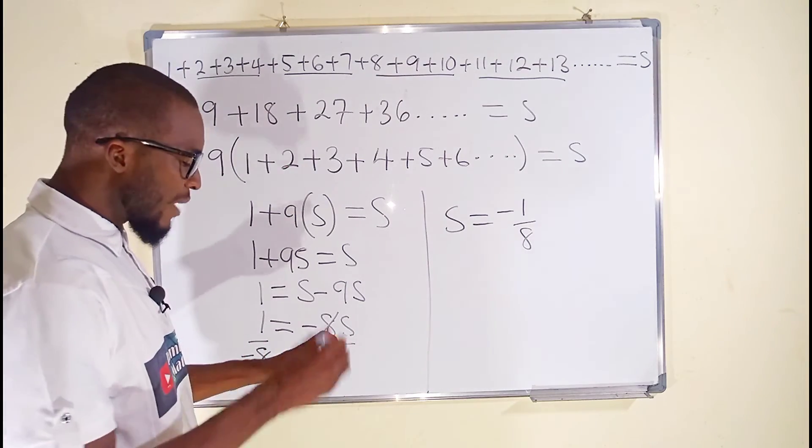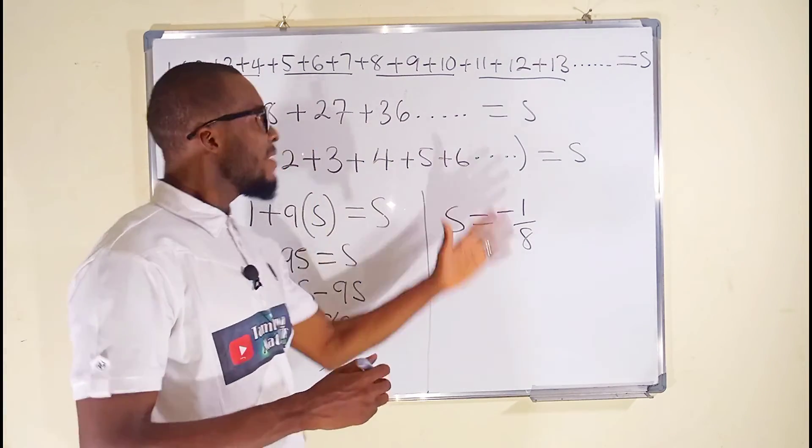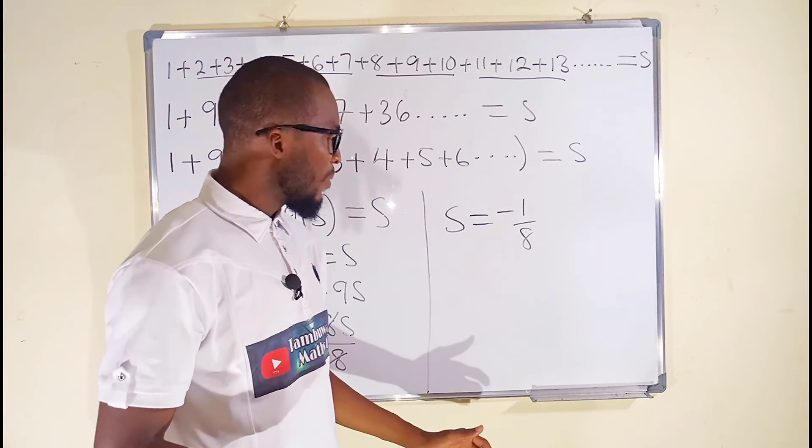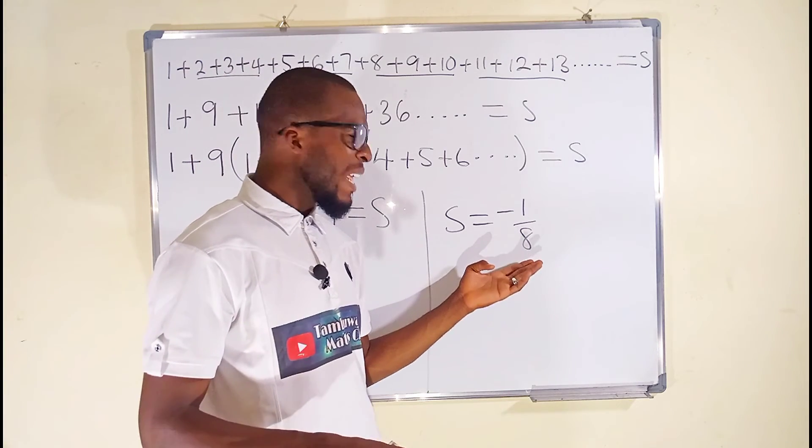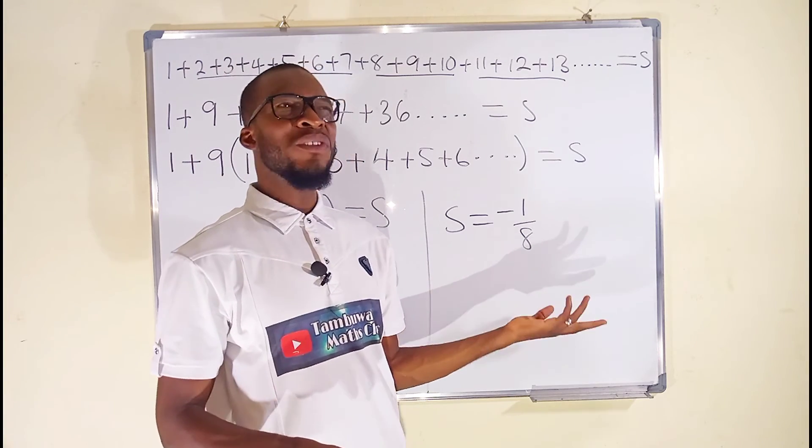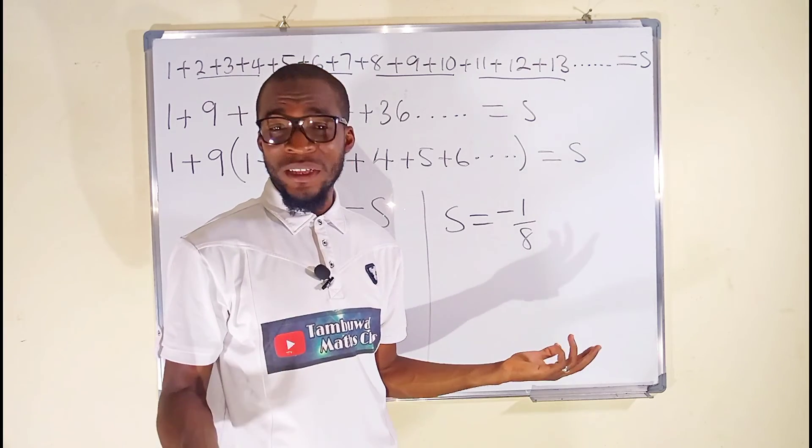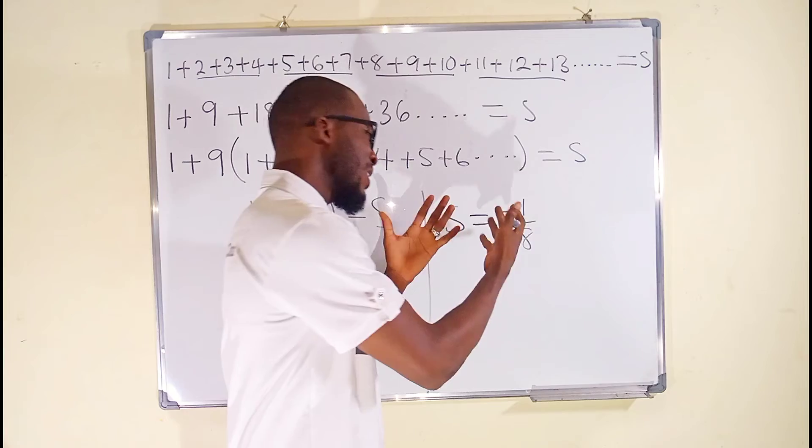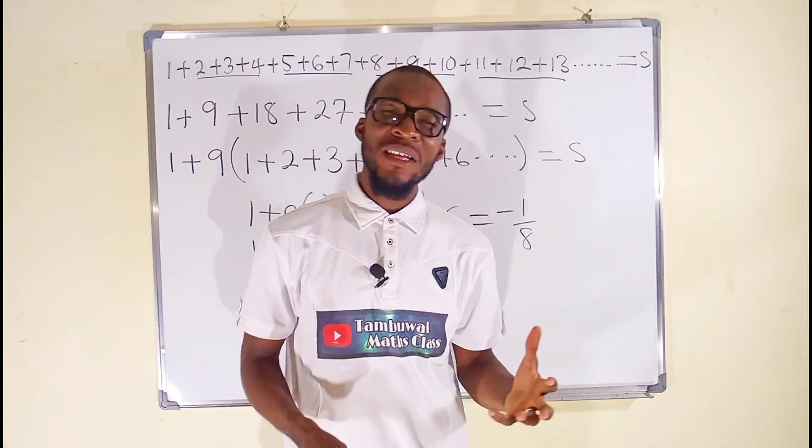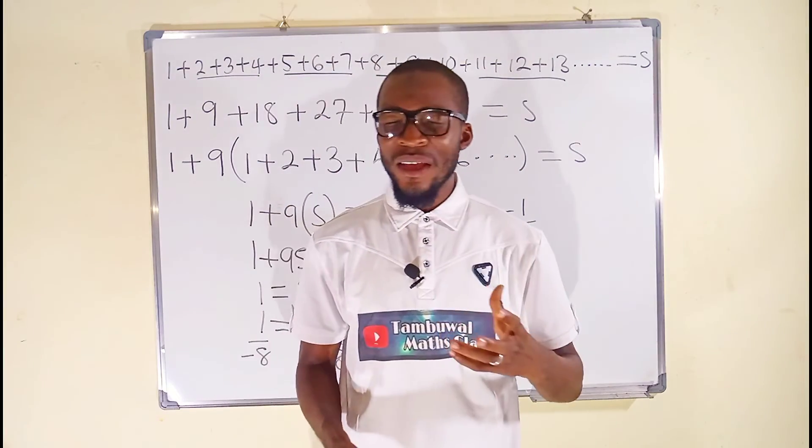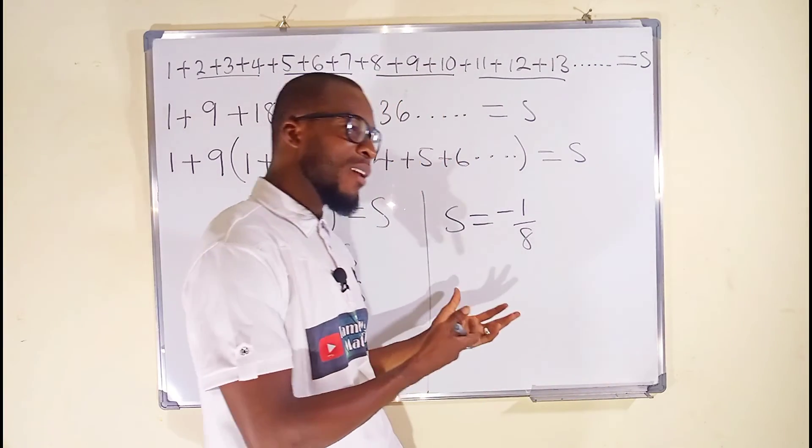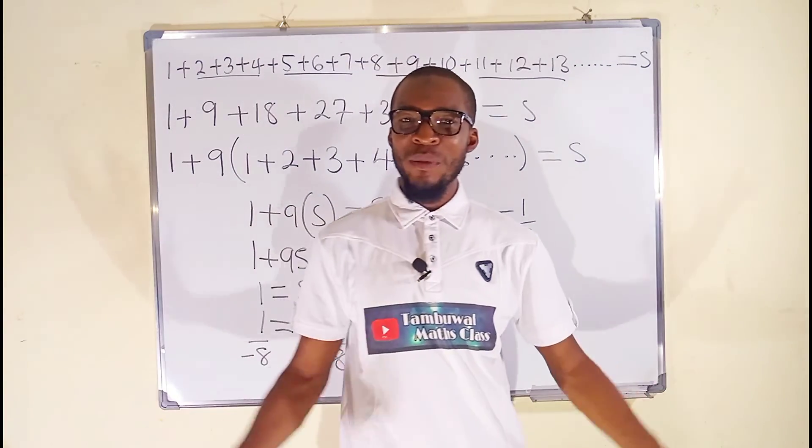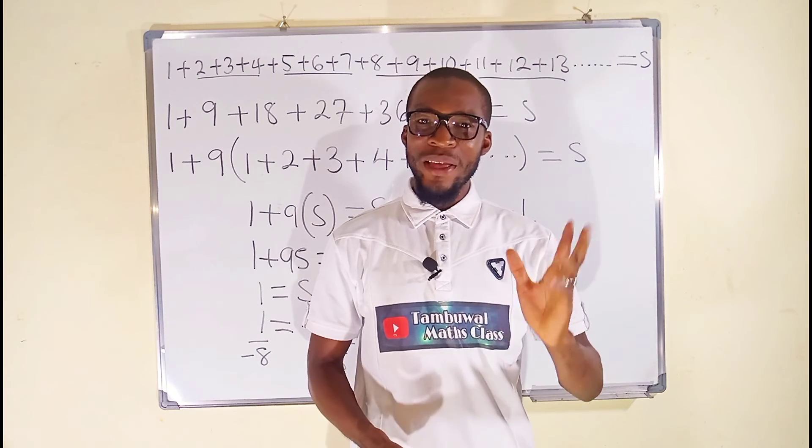You can see that after adding this series of natural numbers, we finally obtain a negative result. How is it possible? I don't even know why. But I have to conduct a research to find out why we are getting this negative result. If you have any idea to why we are getting this negative result, kindly state it in the comments box below. Bye bye.